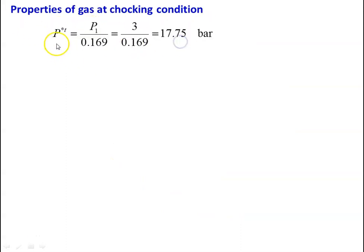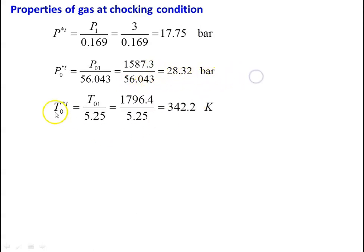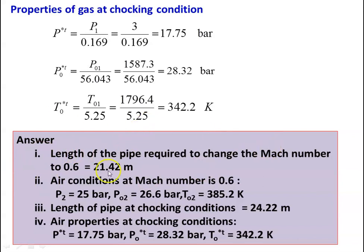Properties at choking condition: P*T = P1/0.169 = 3/0.169 = 17.75 bar; PO*T = PO1/56.043 = 1587.3/56.043 = 28.32 bar; TO*T = TO1/5.25 = 1796.4/5.25 = 342.2 K. Answer: length to change Mach number to 0.6 = 21.42 m; at exit — P2 = 25 bar, PO2 = 26.6 bar, TO2 = 385.2 K; length at choking = 24.22 m; choking properties — P*T = 17.75 bar, PO*T = 28.32 bar, TO*T = 342.2 K.